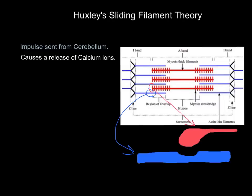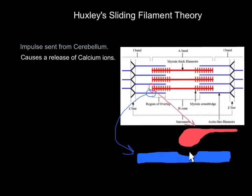Looking at a diagram: the blue actin filament has a small cavity called a binding site. The tentacle-like structures on the myosin filament are called myosin heads. When a contraction takes place, the myosin head has to fit into the binding site on the actin filament, and then a power stroke takes place — the myosin locks into the actin and pulls it, causing the sarcomere to shorten.